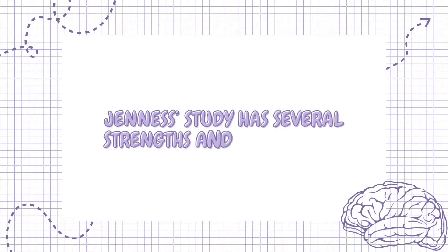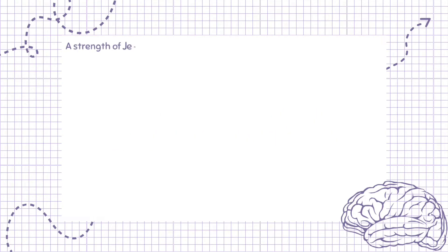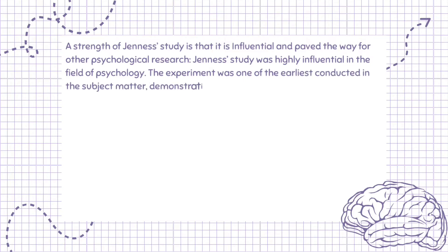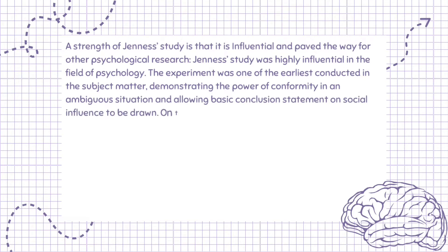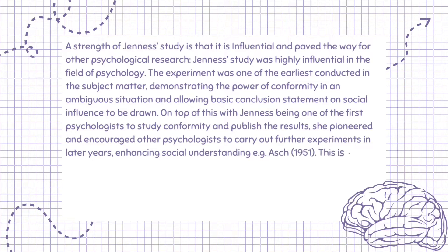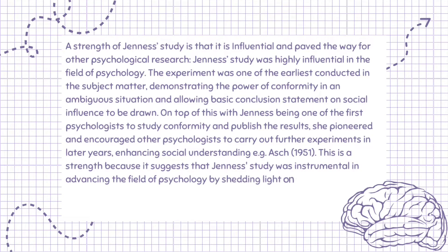Jeunesse's study has several strengths and limitations. A strength of Jeunesse's study is that it is influential and paved the way for other psychological research. The experiment was one of the earliest conducted in the subject matter, demonstrating the power of conformity in an ambiguous situation and allowing basic conclusions on social influence to be drawn. With Jeunesse being one of the first psychologists to study conformity and publish the results, she pioneered and encouraged other psychologists to carry out further experiments in later years, enhancing social understanding — e.g. Asch, 1951. This is a strength because it suggests that Jeunesse's study was instrumental in advancing the field of psychology by shedding light on the significant role of conformity in shaping behavior and social interactions.